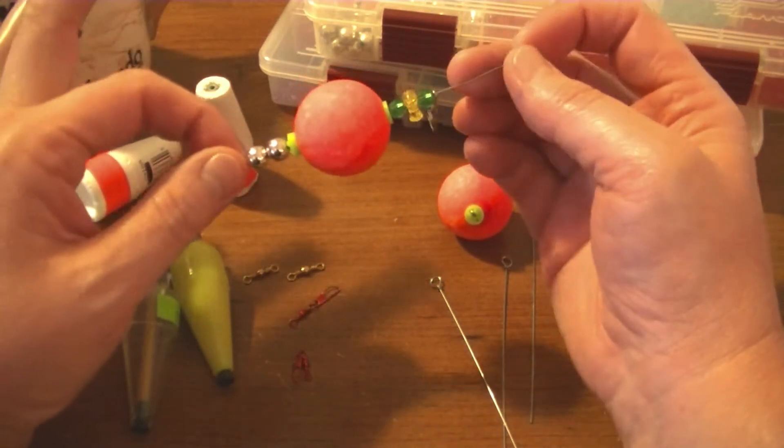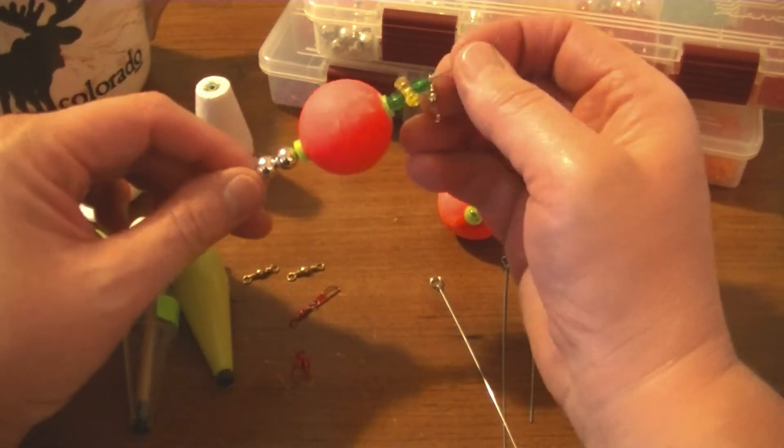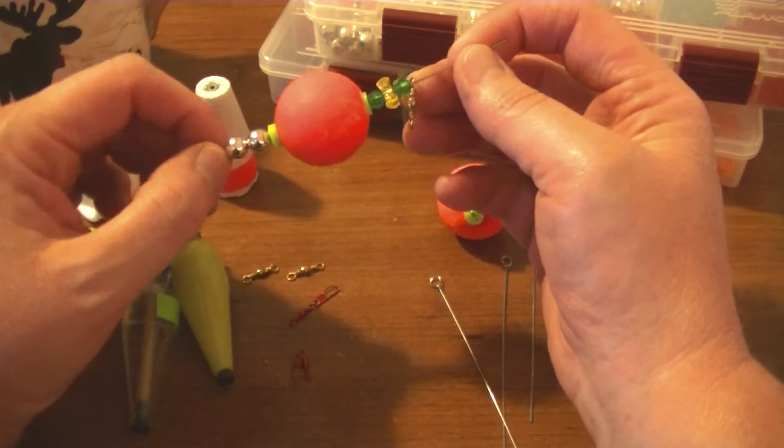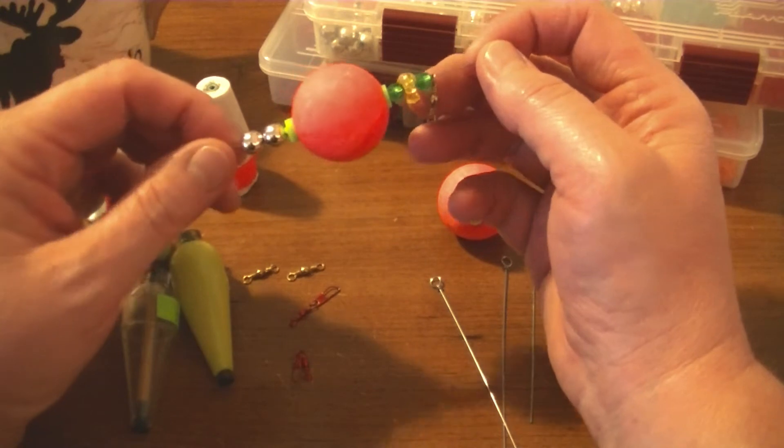Poppers are usually used in the ocean and they're much bigger than this. They're used to catch snapper, speckled trout, and even sharks.